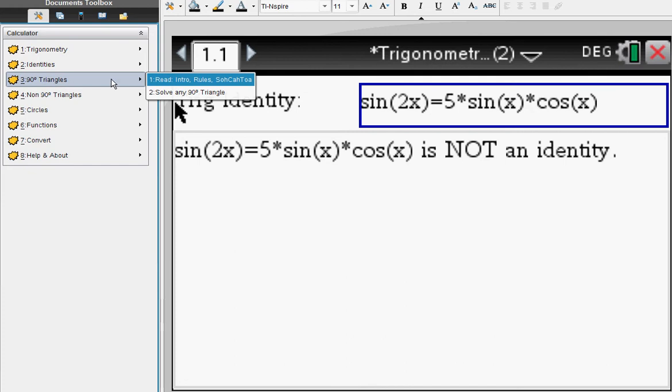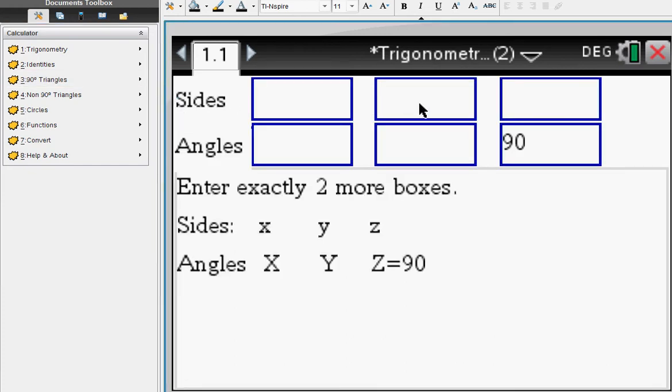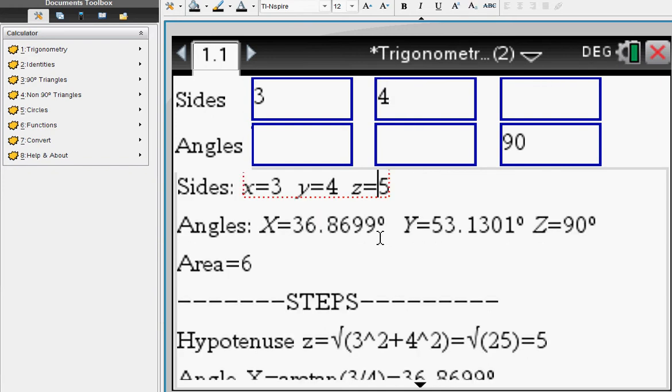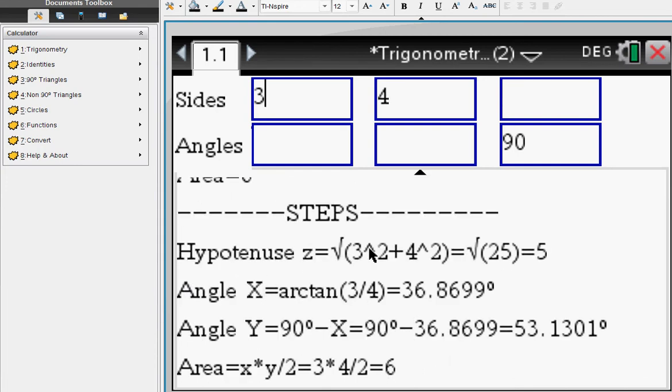For 90-degree triangles, there are six boxes. One is filled in with 90 degrees, so you're left with three sides you can enter on top or two angles on the bottom. It says you have to enter exactly two more boxes. Say we enter two more sides: 3 and 4. We get the familiar 3-4-5 triangle with these angles and area. When you scroll down, you see how the hypotenuse 5 is found.